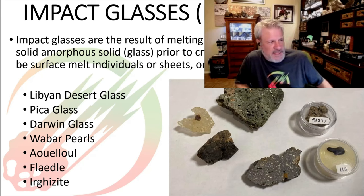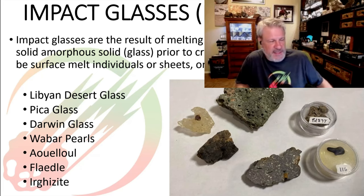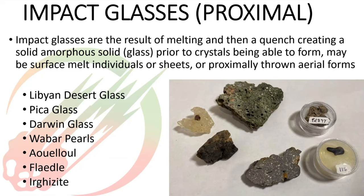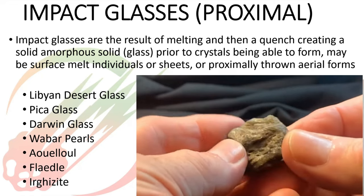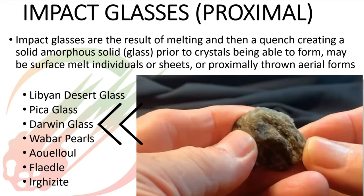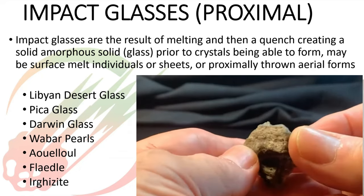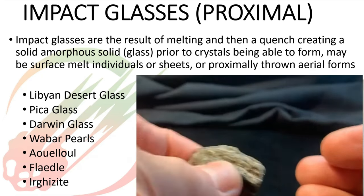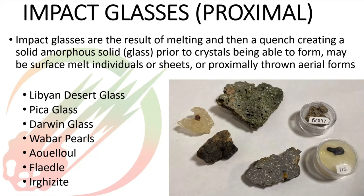Darwin glass is different from Libyan desert glass — different location, much different character. It's usually very dark, brown to black in color, but still glassy just like LDG and Pika glass — it's a surface inlaid glass, not thrown anywhere, part of a melt sheet that formed after an impact, most likely an aerial burst because there's no crater associated with Darwin glass.